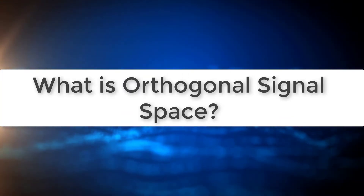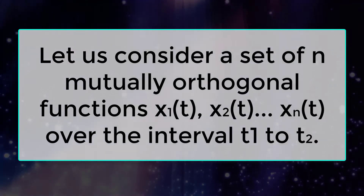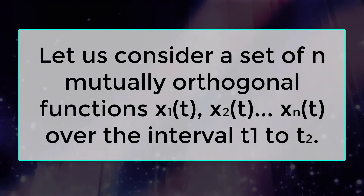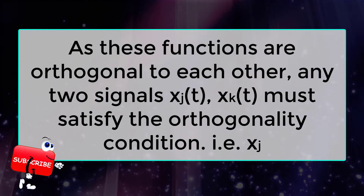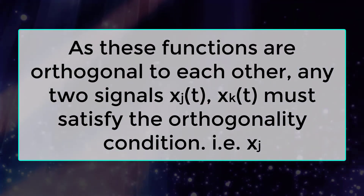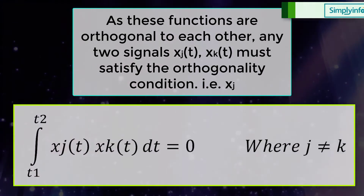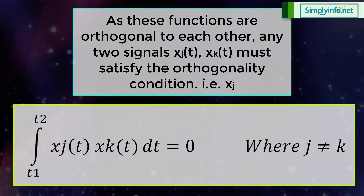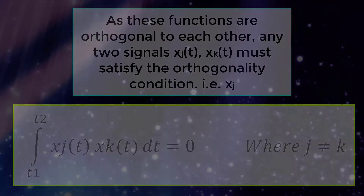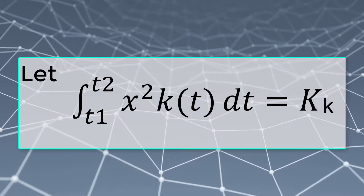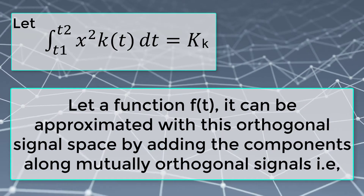What is orthogonal signal space? Let us consider a set of n mutually orthogonal functions x1(t), x2(t), up to xn(t) over the interval t1 to t2. As these functions are orthogonal to each other, any two signals xj(t) and xk(t) must satisfy the orthogonality condition: the integral from t1 to t2 of xj(t) times xk(t) dt equals zero, where j is not equal to k. Let the integral from t1 to t2 of the square of xk(t) dt equal kk.